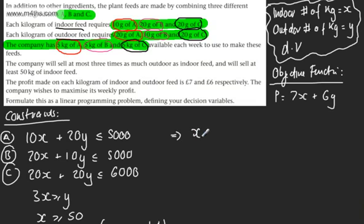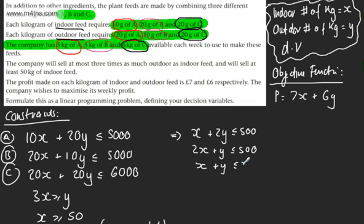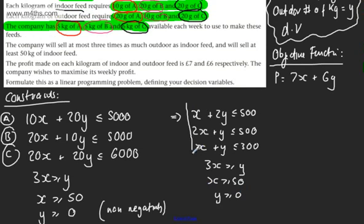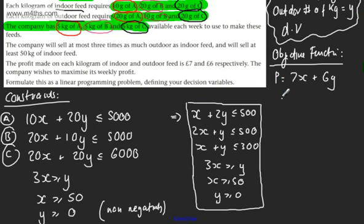Let's tidy up the constraints. Dividing the A inequality by 10 gives x plus 2y is less or equal to 500. Dividing the B inequality by 10 gives 2x plus y is less or equal to 500. Dividing the C inequality by 20 gives x plus y is less or equal to 300. We also have 3x greater or equal to y, x greater or equal to 50, and y greater or equal to 0. These are now our constraints.